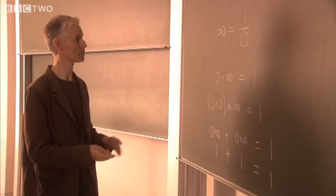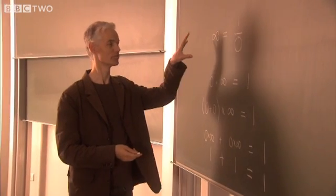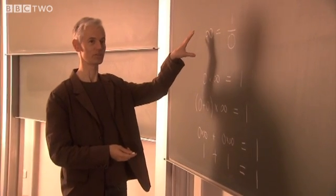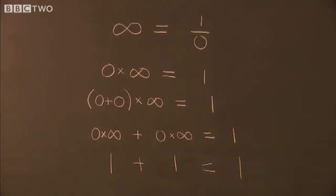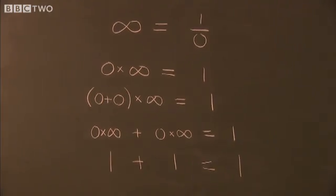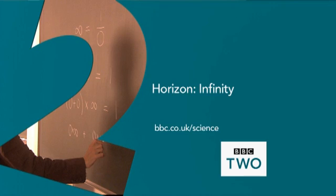And now we've arrived at a piece of nonsense: 1 plus 1 equals 1, which is a problem. And what is the moral of that? You cannot include infinity as a normal number and expect all the rules of arithmetic to continue to hold.